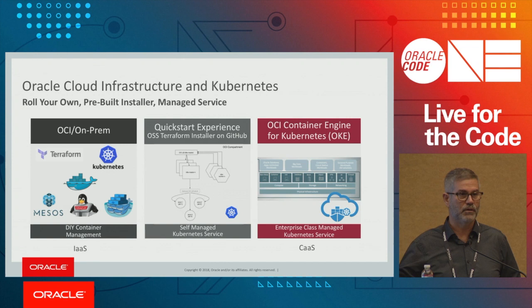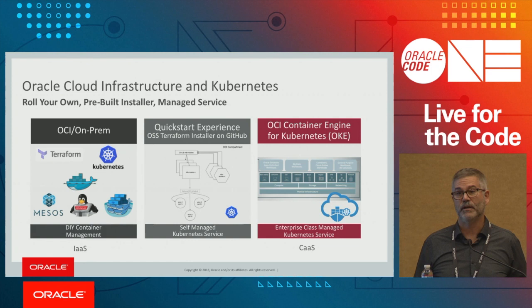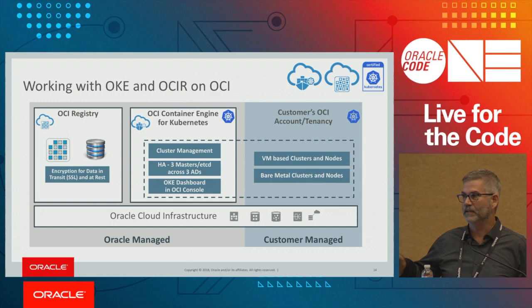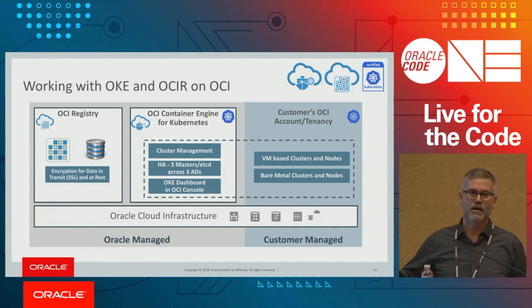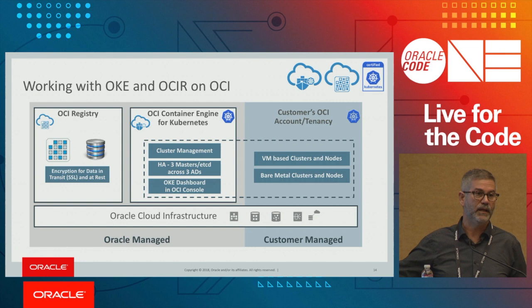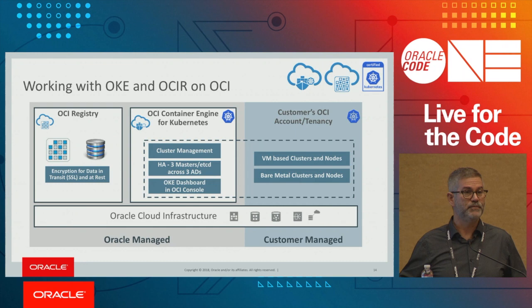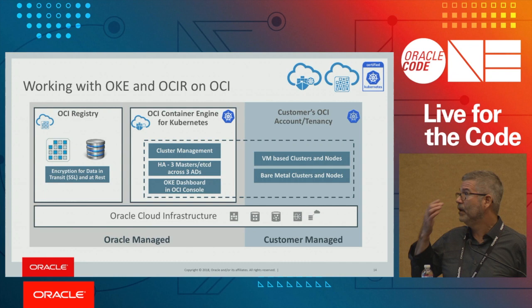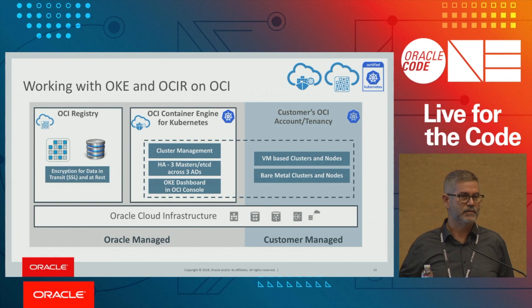OKE also includes a fully Docker v2-compliant registry running in Oracle's tenancy, as does the control plane. You don't pay for the registry beyond storage costs, and you don't pay for the master plane VMs at all — only for the worker nodes running in your tenancy. By default, Oracle creates a highly available control plane spread across availability domains in a region, with etcd running across those instances and backed up regularly.